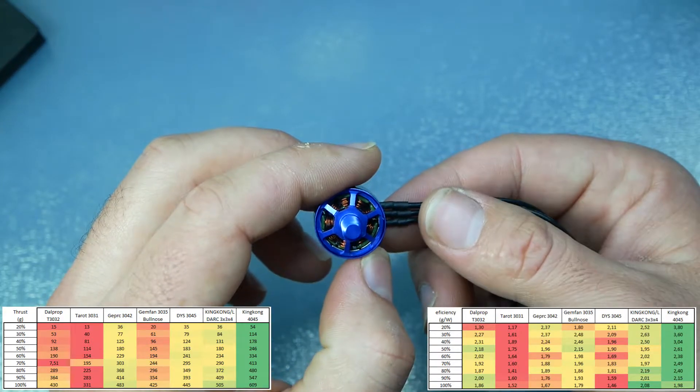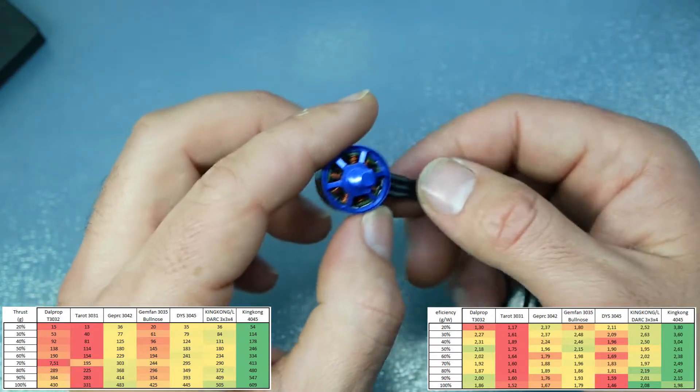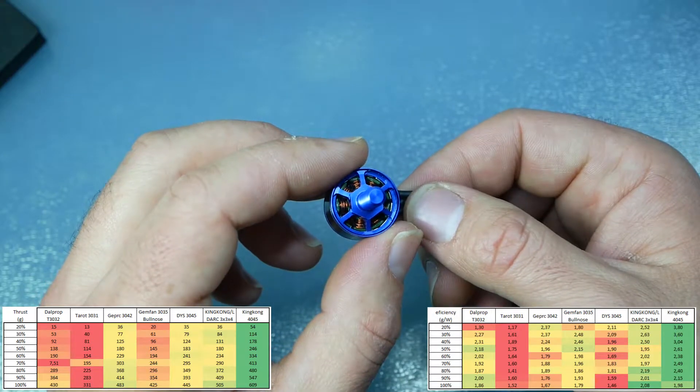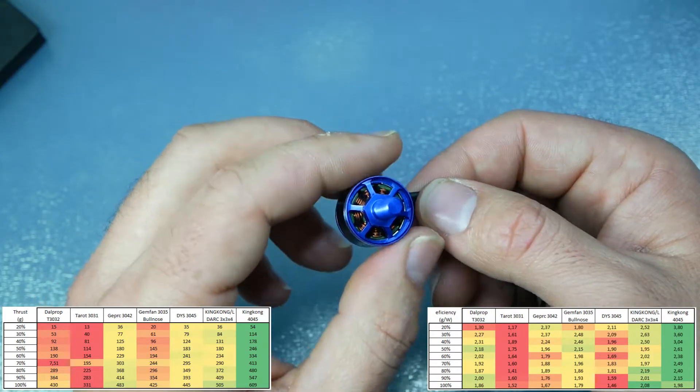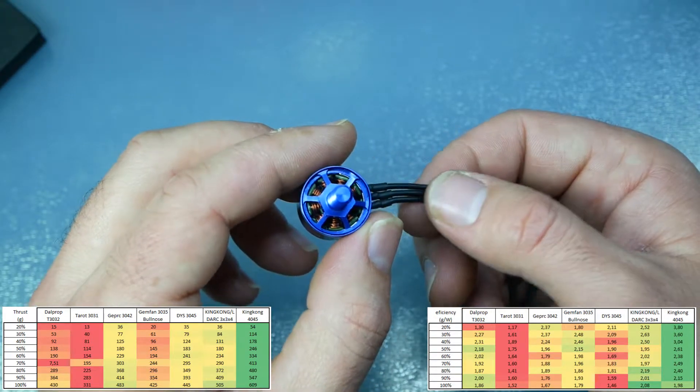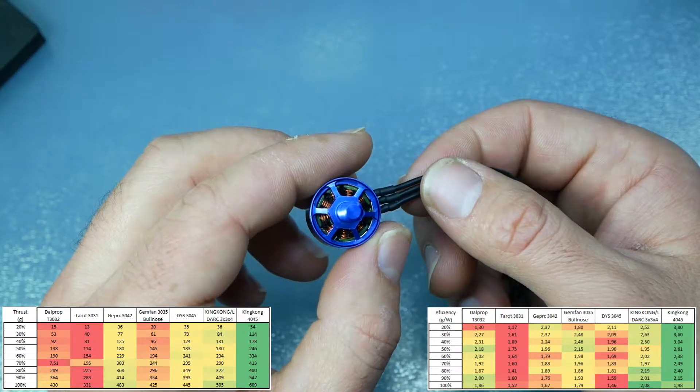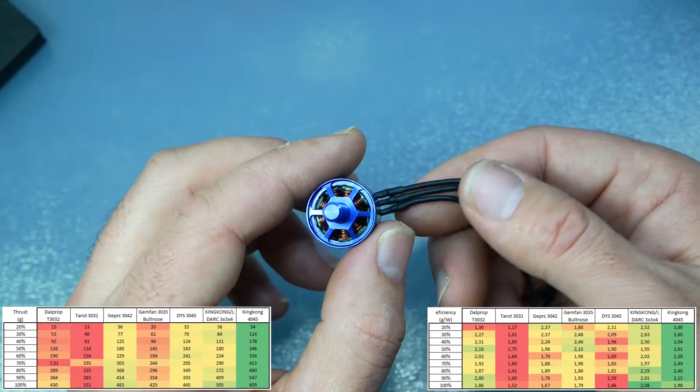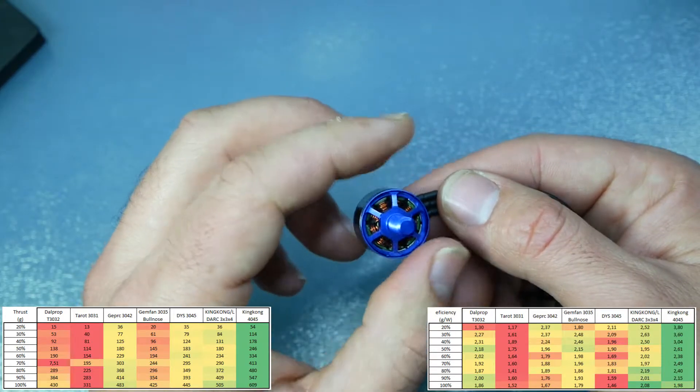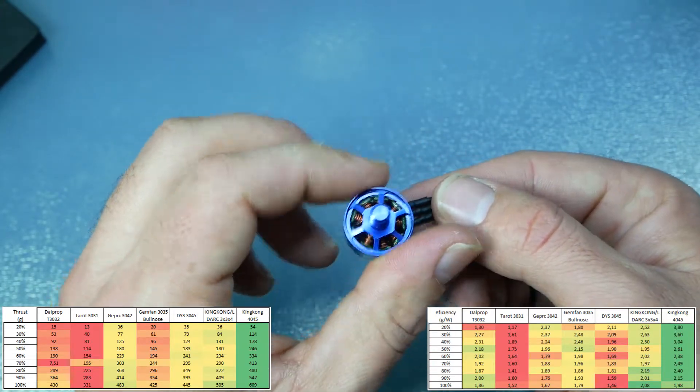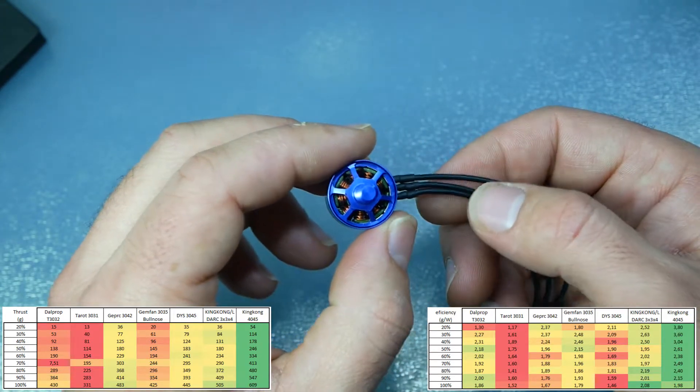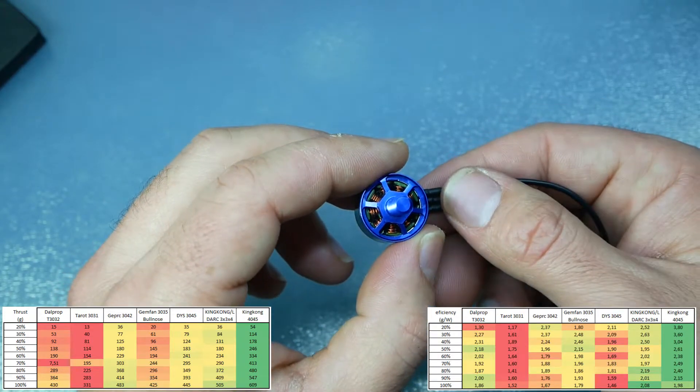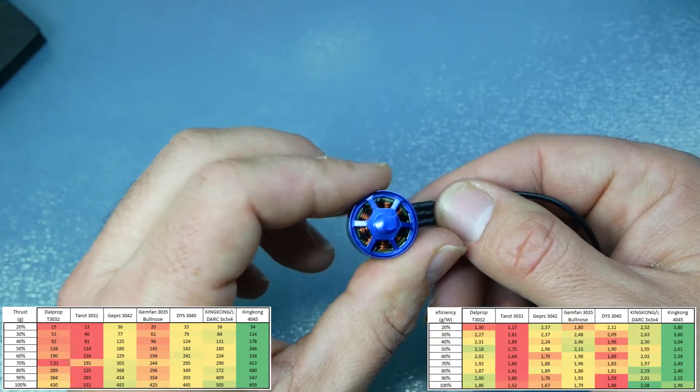On 3 inches with the 4-blade propeller, the consumption was almost 16 amps. And the numbers are very good. Because with 3-blade propellers, I achieved from 400 to 500 grams.